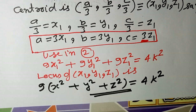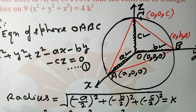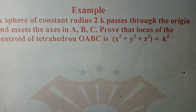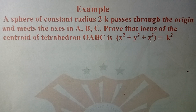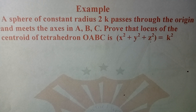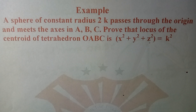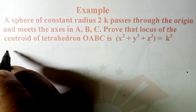This is the answer. Now look at this next question. A similar question: a sphere of constant radius 2k passes through the origin and meets the axes in A, B, C. Prove that the locus of the centroid of tetrahedron OABC is x² + y² + z² = k². Let us solve it.